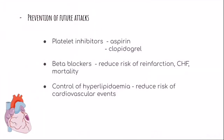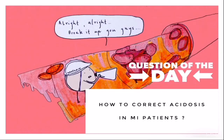For prevention of future attacks, platelet inhibitors like aspirin or clopidogrel and beta blockers are used to reduce risk of heart failure and mortality. Control of hyperlipidemia also reduces risk of cardiovascular events. The question of the day is: how to correct acidosis in myocardial infarction patients? Leave your answer in the comment section. Thank you.